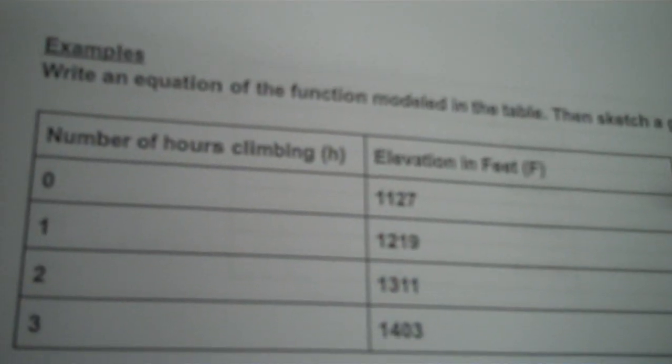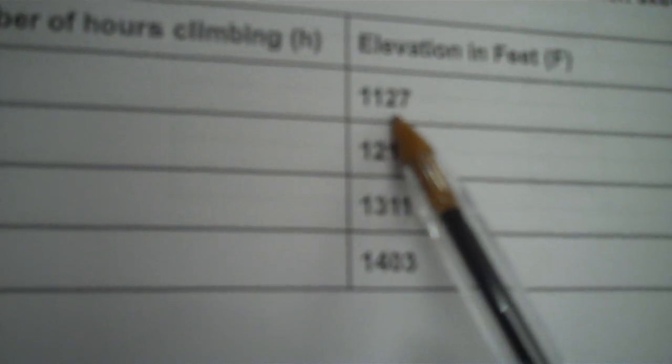Now we're getting into equations and functions. The first problem says: write an equation of the function modeled in the table, then sketch a graph. So you have hours of climbing — at zero hours the person is at 1,127 feet, at one hour this amount, two hours this amount, three hours this amount, and so forth. You need to write an equation that represents his feet.